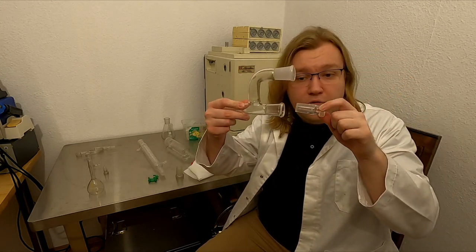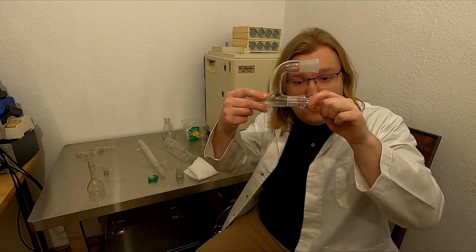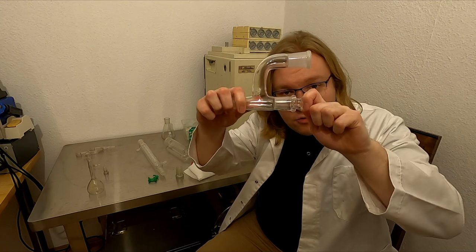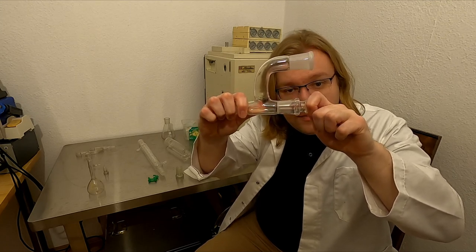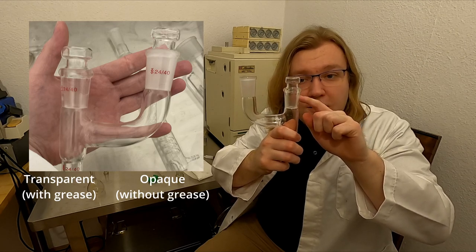Slide the male joint into the female joint, slowly twisting to distribute the grease. You can see the joint becoming more transparent, where grease makes a tight seal. This confirms that this joint is nicely sealed now.